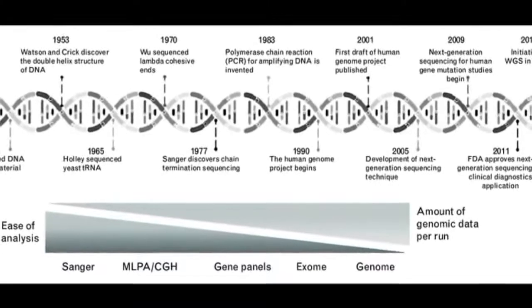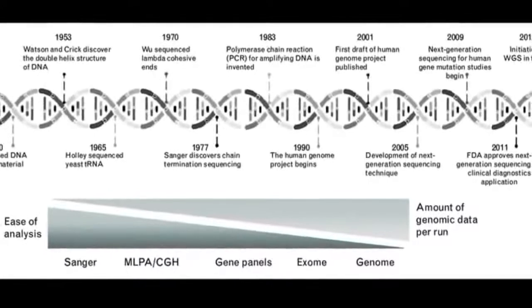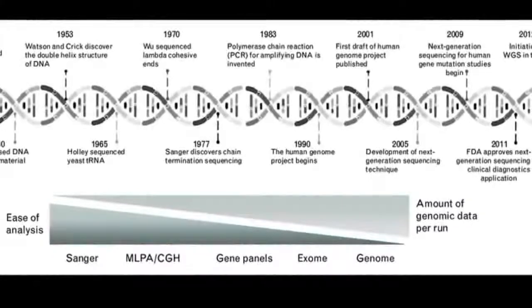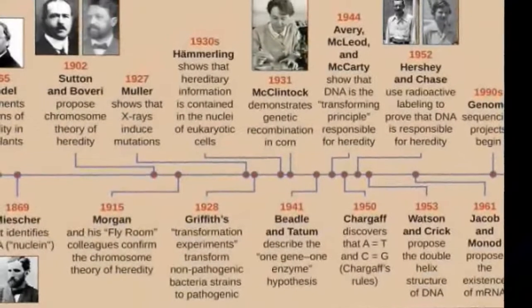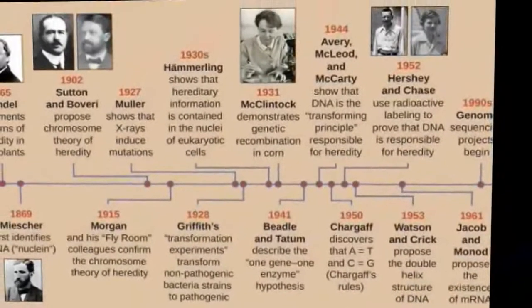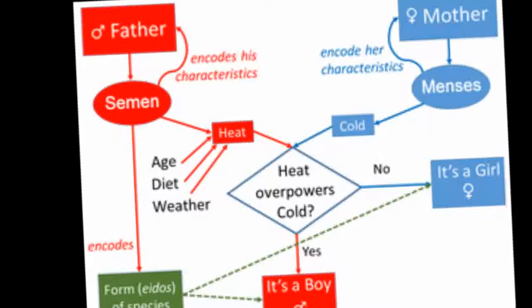Modern genetics began with the work of the Augustinian friar Gregor Johann Mendel. His work on pea plants, published in 1866, established the theory of Mendelian inheritance.